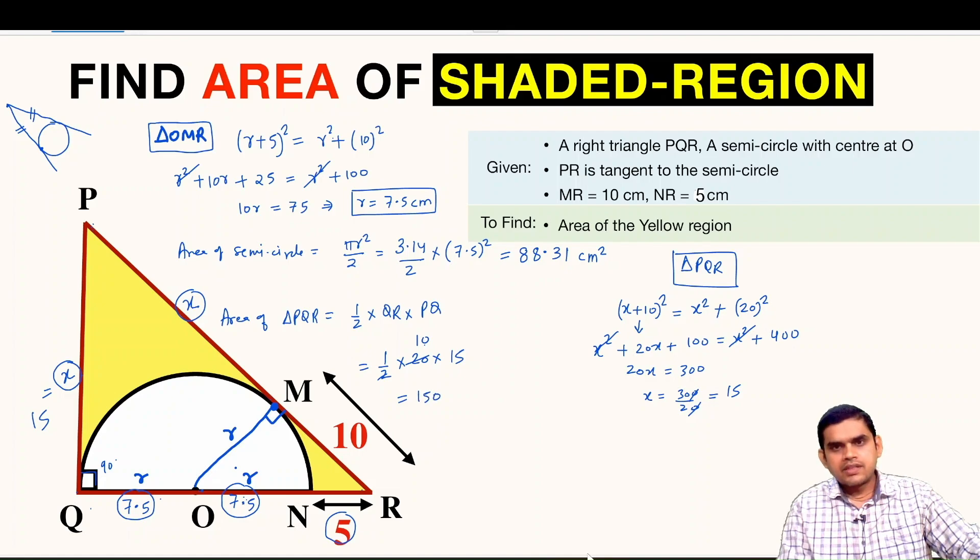So now we were asked to find the area of this yellow region and this is equal to area of this complete triangle PQR, that is 150, minus area of the semicircle, that is 88.31. If we subtract we will get 61.69 centimeter square. This is the final answer.